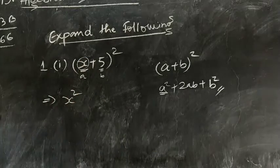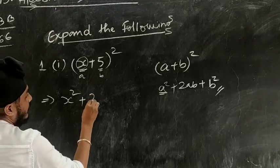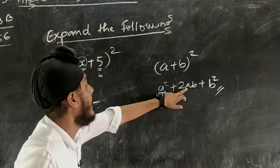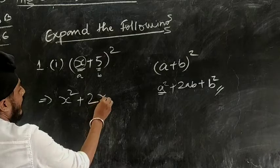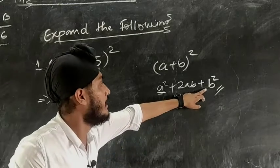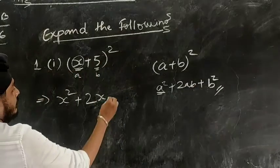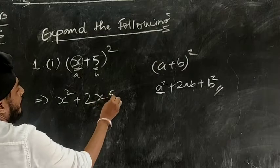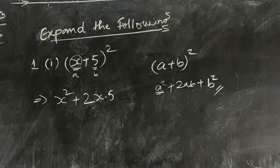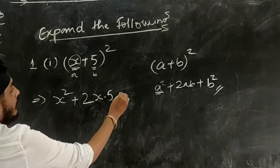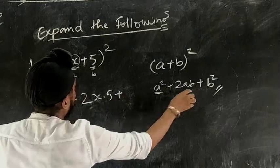So we'll put x² plus 2ab. a is x, so we'll write x, and b is 5, so × 5. I am just putting dot for denoting it as multiplication. Last, plus b². So what is b here? 5, so 5².